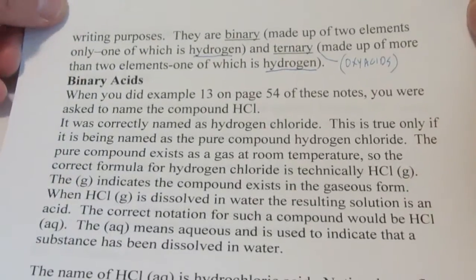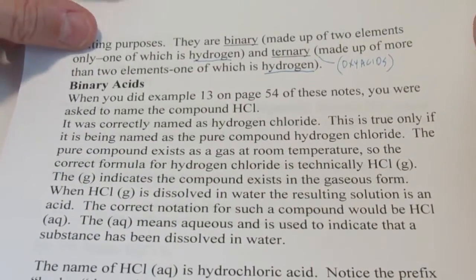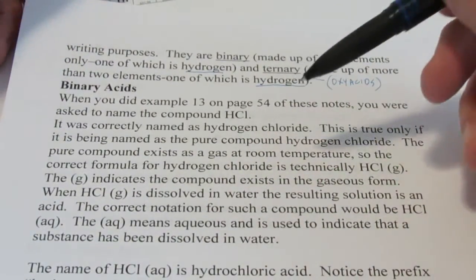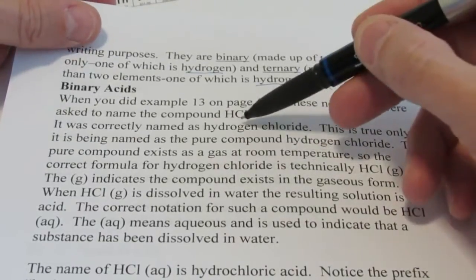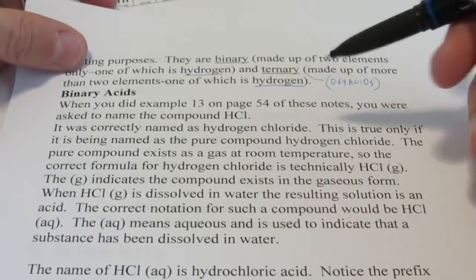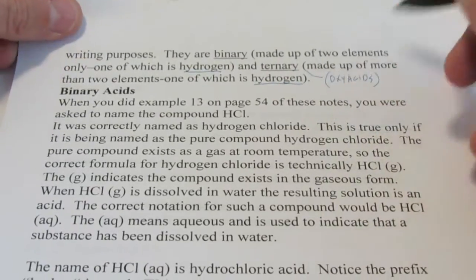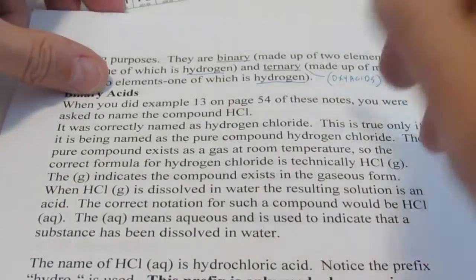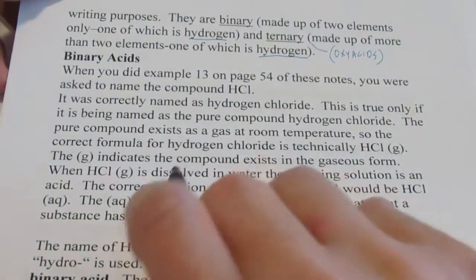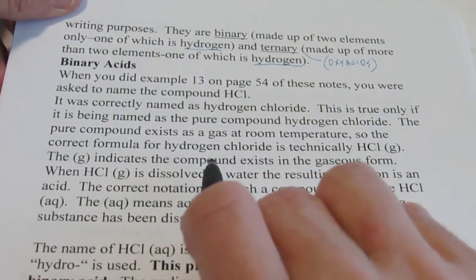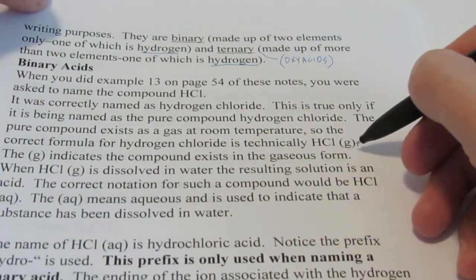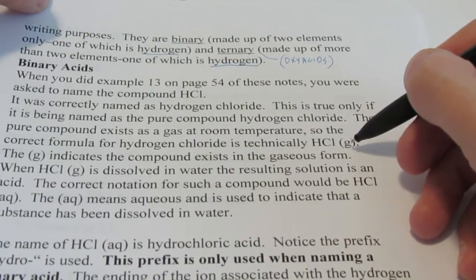When we did example 13 on an earlier page of these notes, we were asked to name the compound HCl. We named it as a covalent binary compound — non-metal to non-metal — hydrogen chloride. Now, this is true only if it's being named as the pure compound. The pure compound exists as a gas at room temperature. So the correct formula for hydrogen chloride is technically HCl(g), with the small letter G in parentheses stating that it's in the gaseous phase.